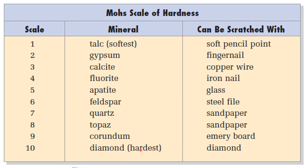Talc is so soft and brittle that it probably cannot make a mark on anything. So when it comes to marking, let's say corundum versus feldspar — feldspar is weaker, so corundum can leave a mark on it, but feldspar will not leave a mark on corundum. It is a one-direction comparison. It is a relative scale, by the way.